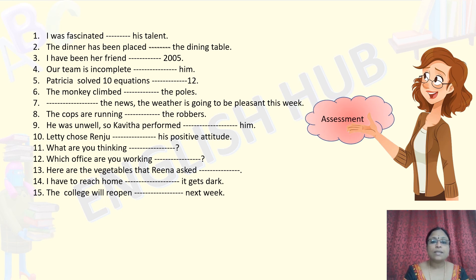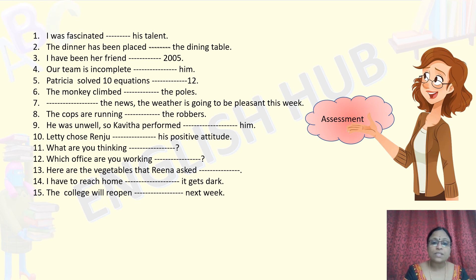The cops are running behind the robbers. He was unwell, so Kavita performed in place of him. Letty chose Renju because of his positive attitude. What are you thinking about? Which office are you working in? Here are the vegetables that Rina asked for. I have to reach home before it gets dark. The college will reopen by next week.